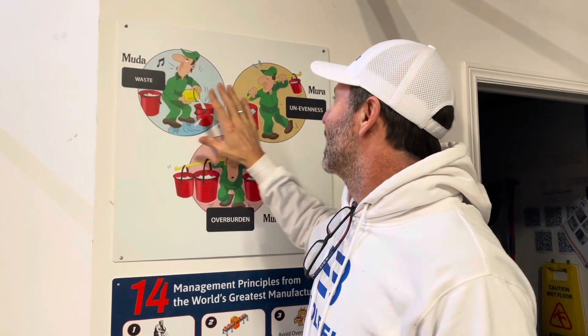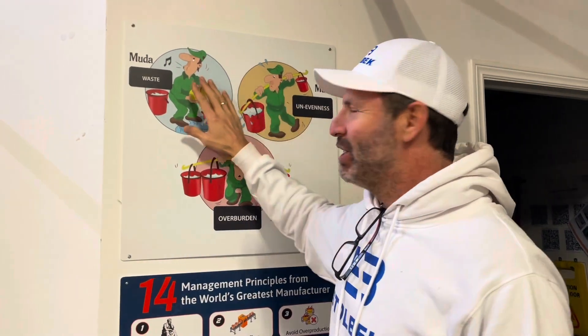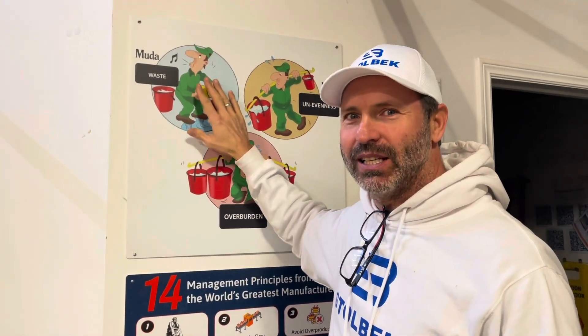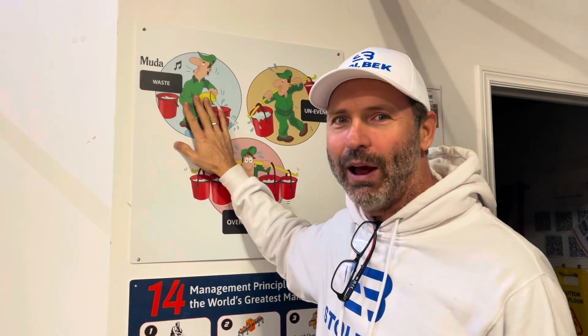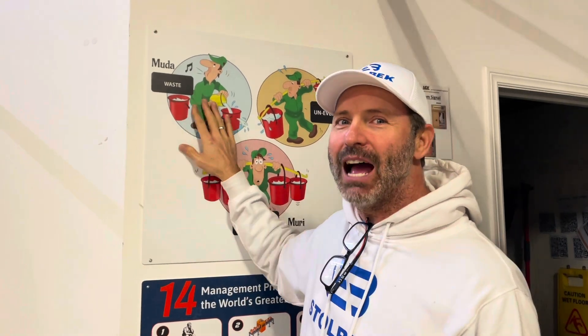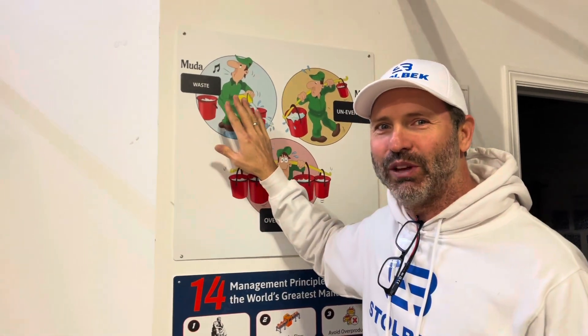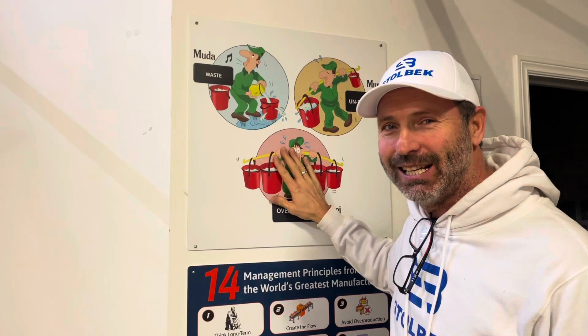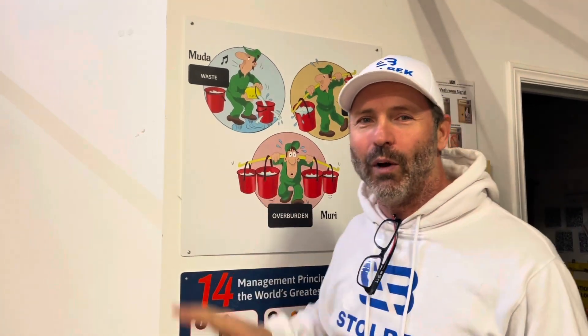Imagine how far you've taken your business and your people just knowing the eight deadly wastes. Now imagine that's only 33% and you still have another 66% to go — when you start understanding how to level your flow and how to stop overburdening your machines and people.